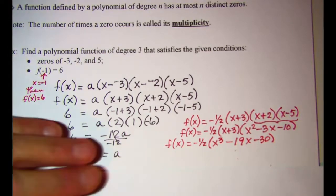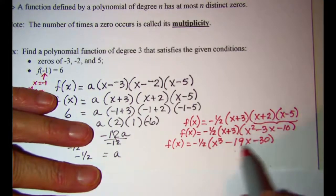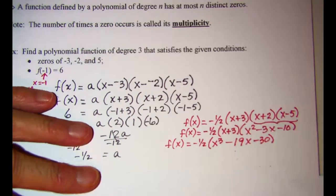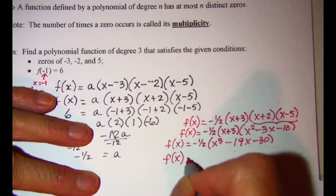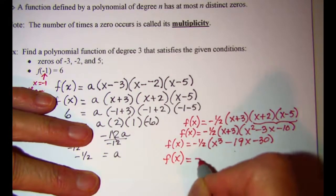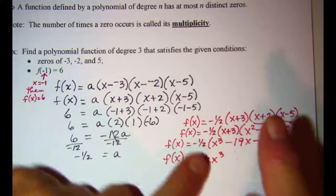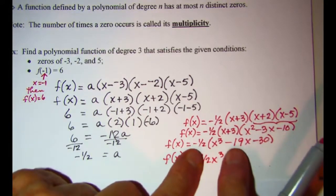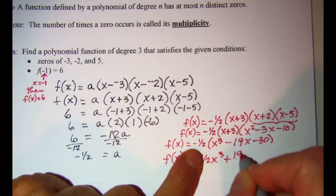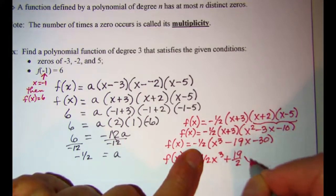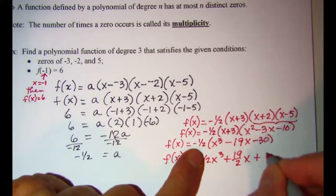The only thing left is to distribute negative one-half through the parentheses. So my function is f of x equals negative one-half x cubed plus nineteen-halves x plus 15.